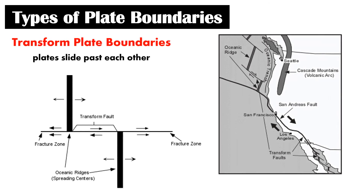The last type of plate boundary is the transform plate boundary. It is described as two plates which slide past each other. The movement of these two plates is horizontal — they are neither diverging nor converging. It was somewhat transformational in its discovery, because for a long time scientists believed plate boundaries could only be diverging or converging. When transform plate boundaries were discovered, they were able to explain more plate movements. One example is the plate boundary found at the famous San Andreas Fault.